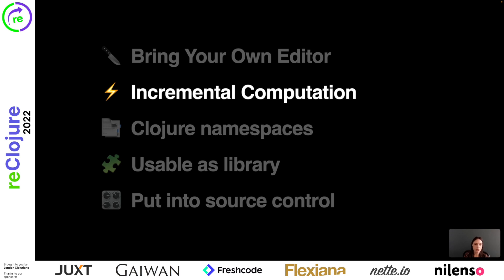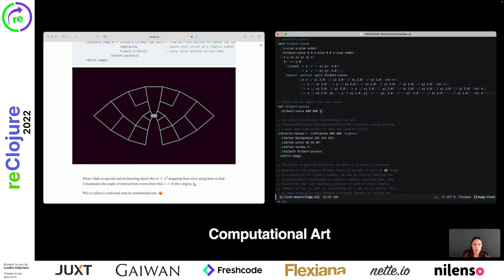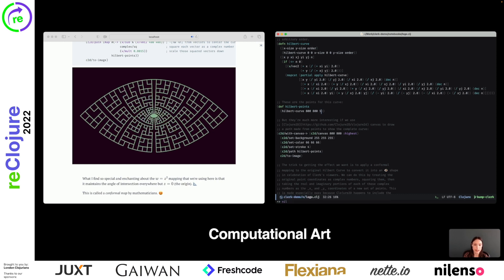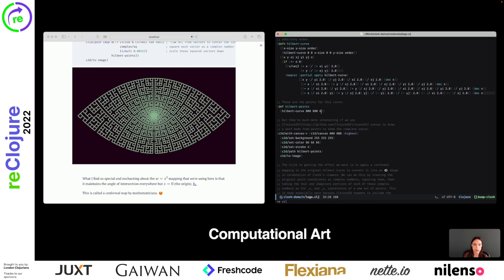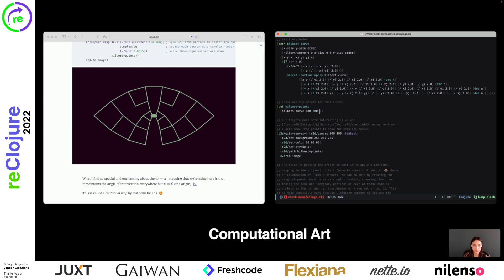Clerk automatically caches results and only evaluates what's changed, providing nearly instant feedback for a lot of use cases. This suits Clerk well for use cases like computational art, where you want fast feedback loops. Here, for example, is the making of Clerk's logo by Jack Rusher. See how the new results appear almost instantly as we change the order of this Hilbert curve.